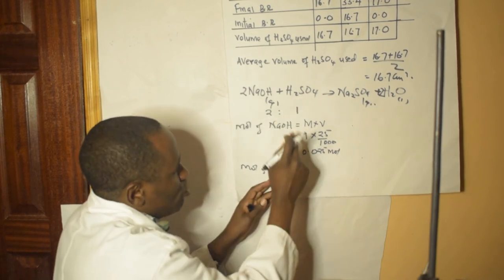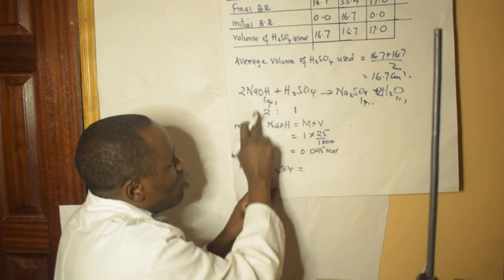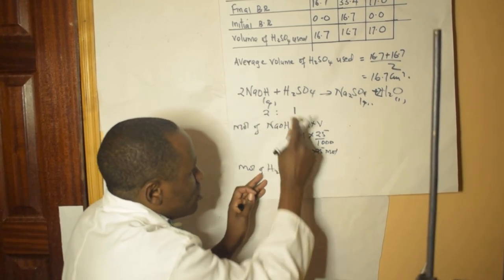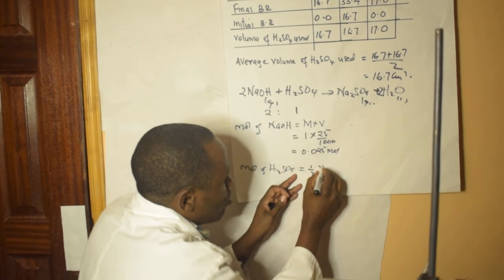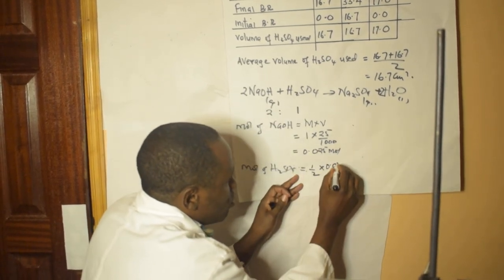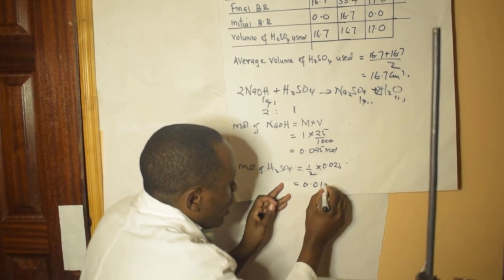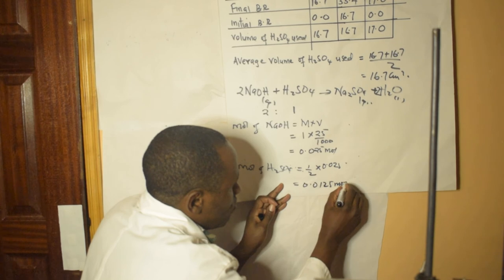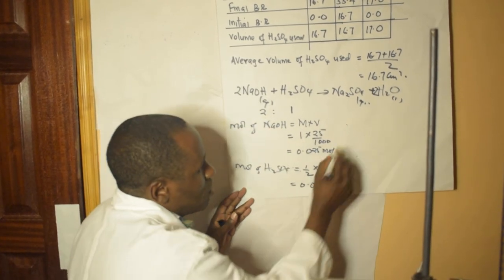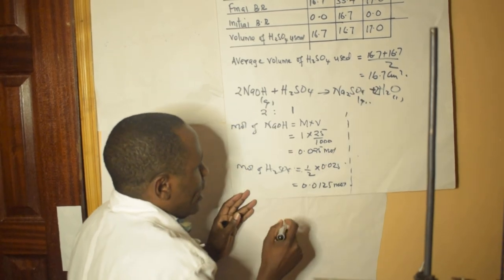Now getting the moles of sulfuric acid — I apply the mole ratio. NaOH is twice as much as H₂SO₄, so the moles of sulfuric acid is one-half of 0.025, which gives 0.0125 moles.